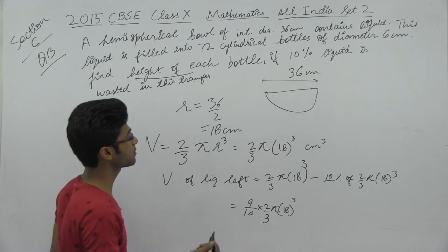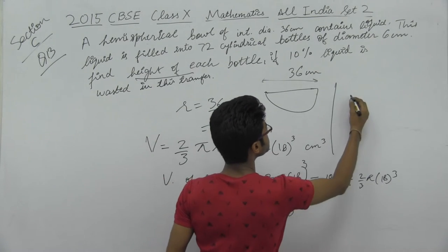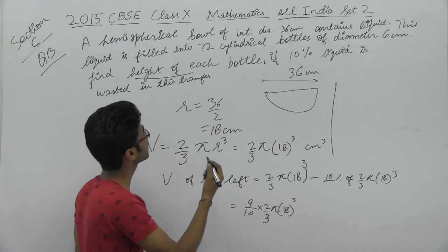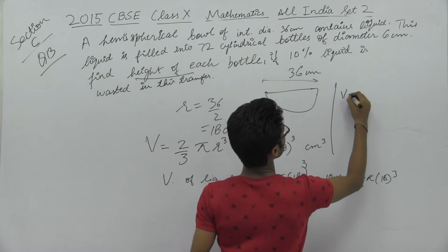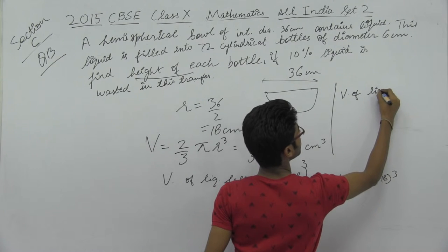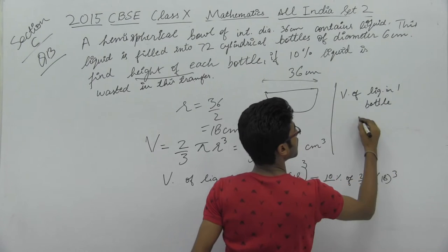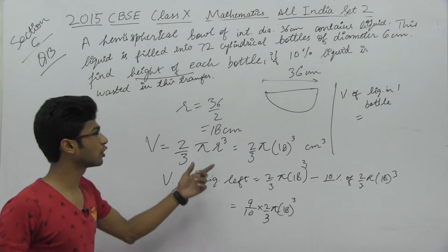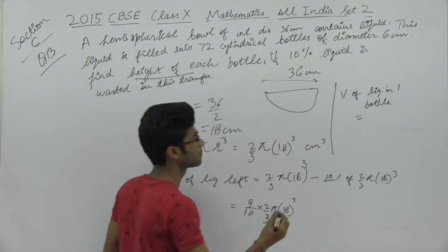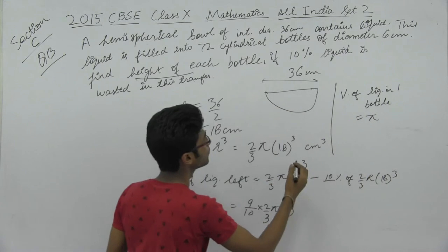The height is unknown. Let the height be h. What is the volume of liquid in one bottle? We know the volume of a cylinder is πr²h.